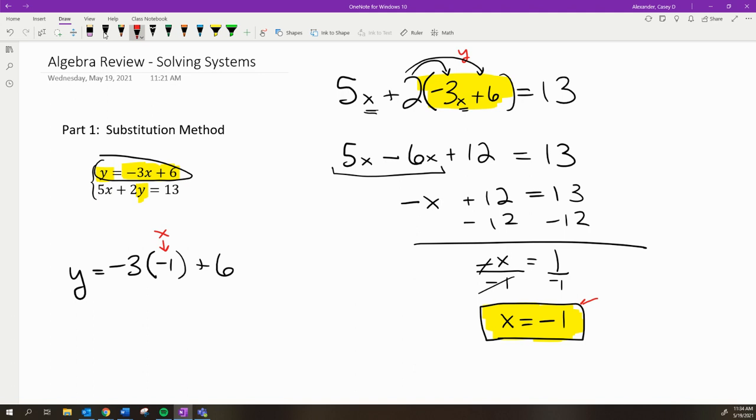So -3 times -1 is +3, and 3 + 6 = 9. The common solution, the one place where these equations are equivalent, is x = -1, y = 9.